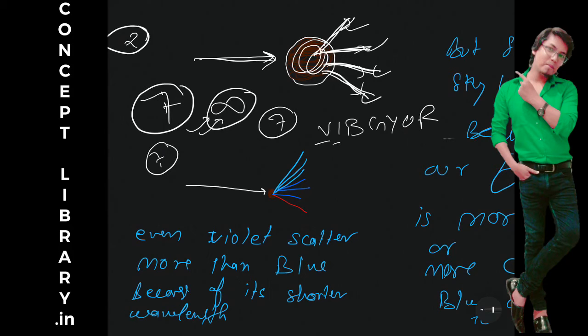So if sunlight is falling on a big particle then all the lights will scatter in same amount, then again will be having a white color, same sunlight.